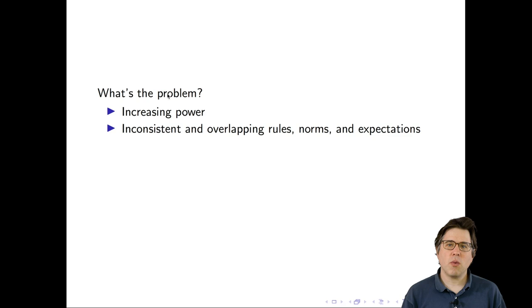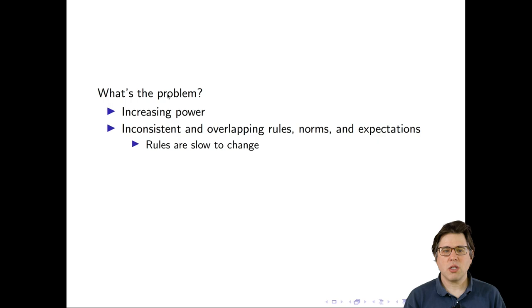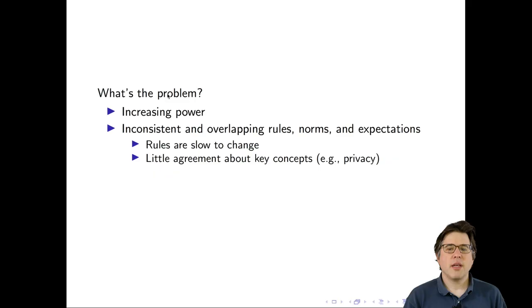This inconsistency comes from several sources. First, the rules are slow to change — the regulations governing IRBs in the U.S. recently underwent a modernization process that took more than five years, making it very hard for rules to evolve as technology evolves. Second, there's little agreement about key concepts at stake. Privacy is a good example — researchers who focus entirely on defining privacy do not agree on how it should even be defined. If experts can't reach consensus, it's very unlikely that empirical researchers and study participants will be able to either.